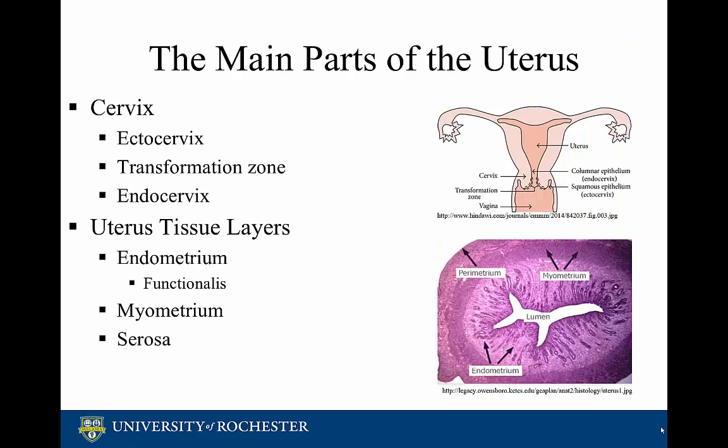The uterus consists of three tissue layers: the endometrium, the myometrium, and the perimetrium or serosa. The cervix is the lower part of the uterus and is divided into the ectocervix, endocervix, and the transformation zone.